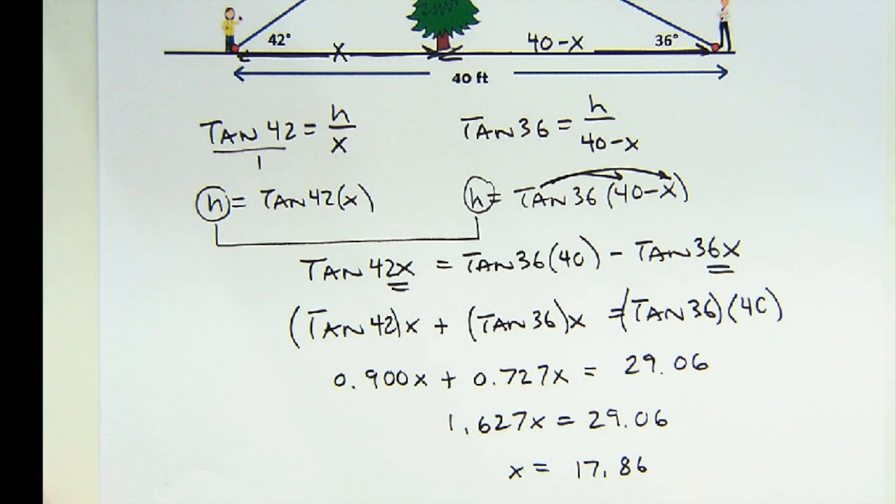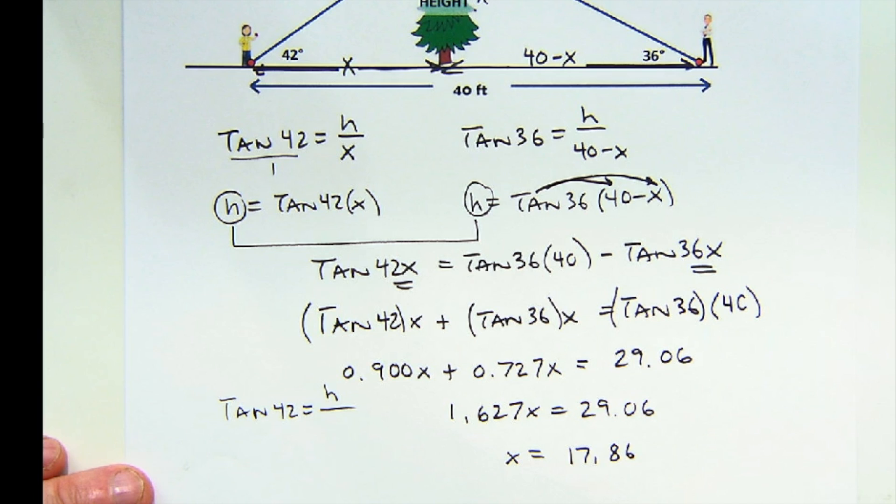And now again, I can just multiply those values. So I multiply that times the tangent of 42.